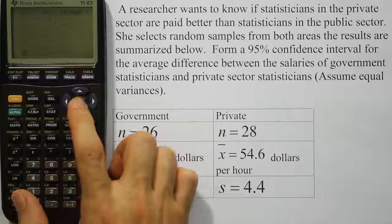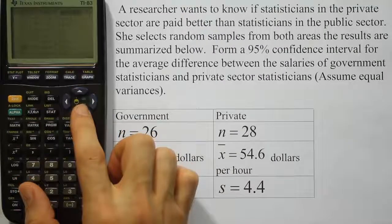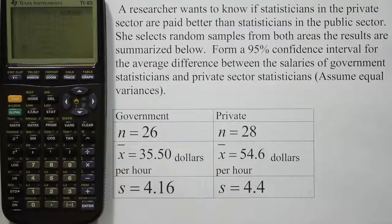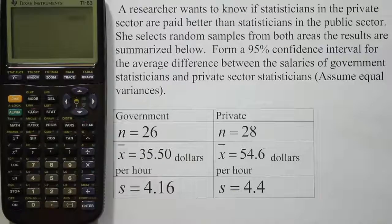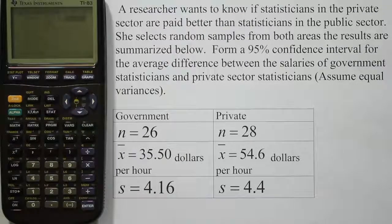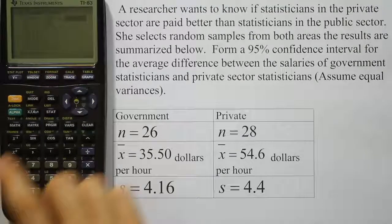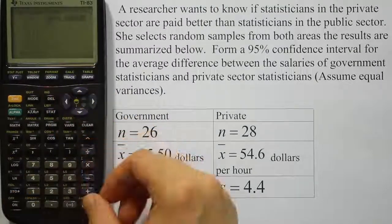So I see option zero there, right? You see option zero there. It says two sample t-interval. So I'm going to go ahead and select that one. Once I do that, again, we have this question the calculator wants to ask for us. It says, do we have stats or do we have the raw data?